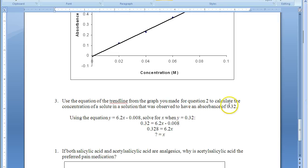So we're saying the absorbance of any of these solutions is equal to 6.2 times the concentration of the solution minus 0.008. So I plug in my 0.32 and then I simply complete the algebra. I would add the 0.008 to the left side of this equation and then to finish, I would divide by 6.2.